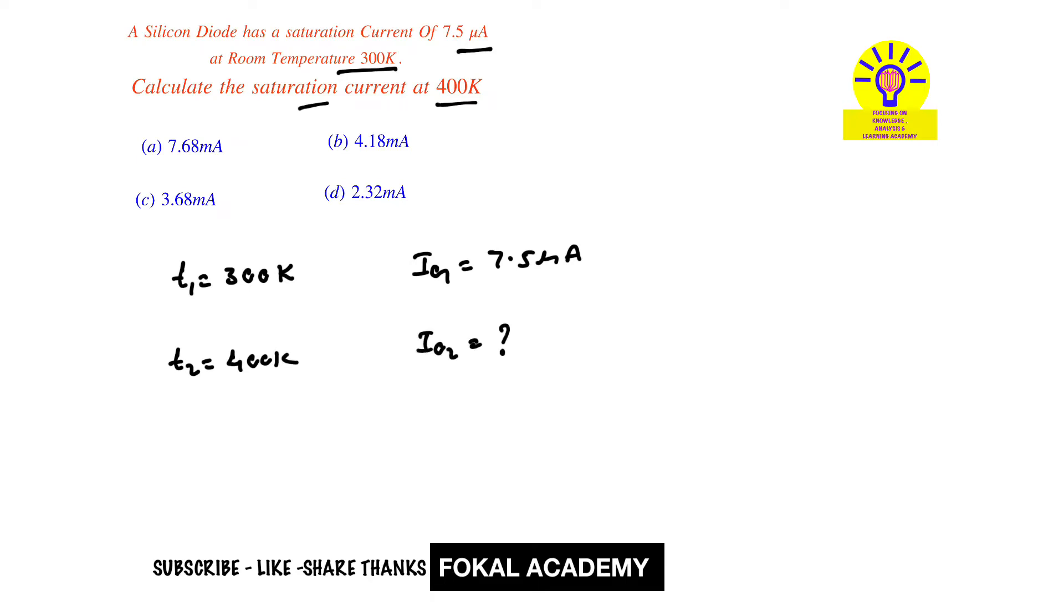Before that, first of all convert temperature from Kelvin to Centigrade by adding minus 273. So T1 becomes 27 degrees Centigrade. T2 becomes 127 degrees Centigrade. Now we have one relation for temperatures and saturation current.